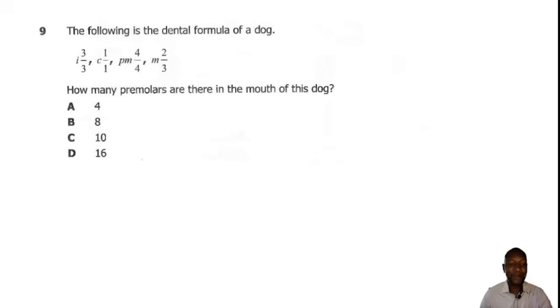Question 9. The following is the dental formula of the dog. How many premolars are there in the mouth of this dog? To find the total number of premolars, we are going to add the number, then we are going to multiply by 2 because the dental formula deals with only half of the mouth. So we add 4 plus 4, which is 8, then multiply by 2, which is equal to 16. So the correct answer here is 16, which is D.